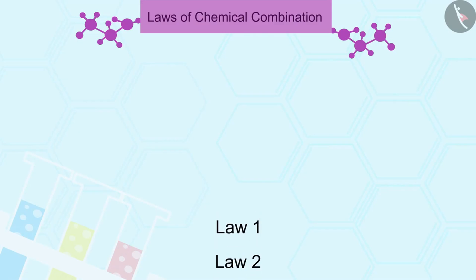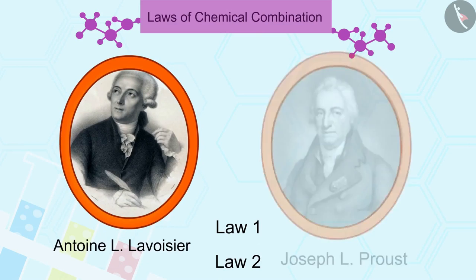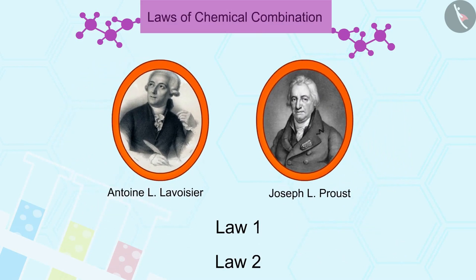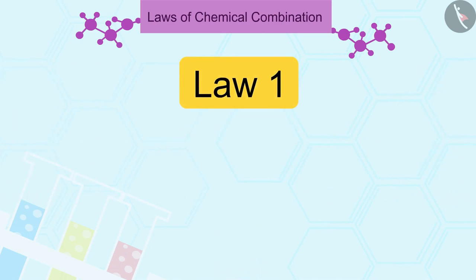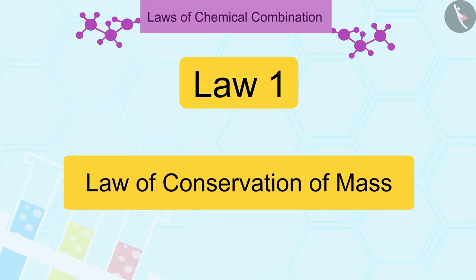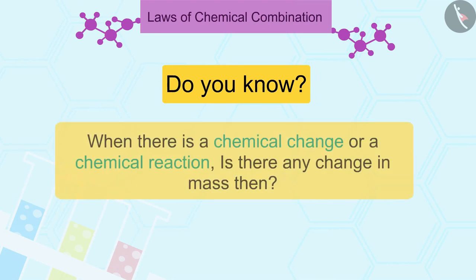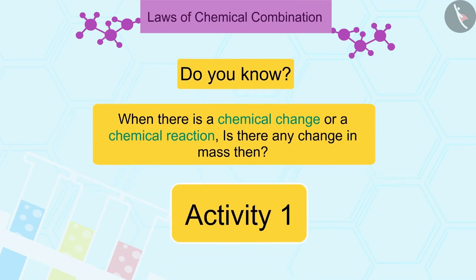Two laws of chemical combination were established after much experimentation by Lavoisier and Joseph L. Proust. Let us look at the first law. The first law is the law of conservation of mass. Friends, when there is a chemical change or a chemical reaction, is there any change in mass then? Let us try to find the answer through an activity.